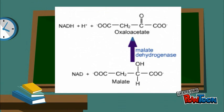Once in the cytoplasm, the malate is reconverted to oxaloacetate, this time by a cytoplasmic form of malate dehydrogenase.